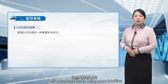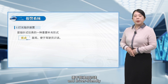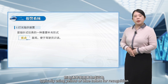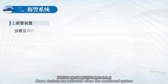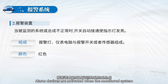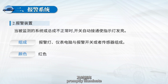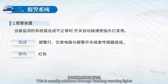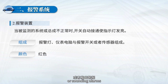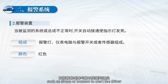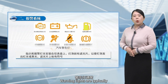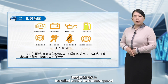Their advantage lies in being more intuitive and driver friendly, typically using yellow or blue colors for recognition. Alarm devices are activated when the monitored system or assembly detects an abnormal condition. These devices promptly illuminate and the corresponding indicator lights emit warning signals. This is usually achieved through flashing warning lights or sounding alarms, such as sirens or buzzers, to alert the driver. Warning lights are typically installed on the instrument panel.